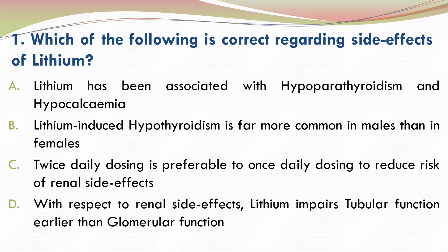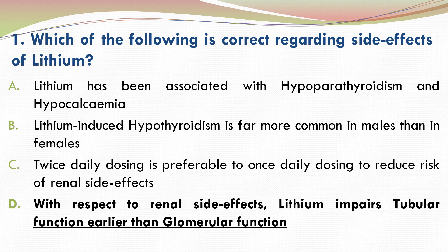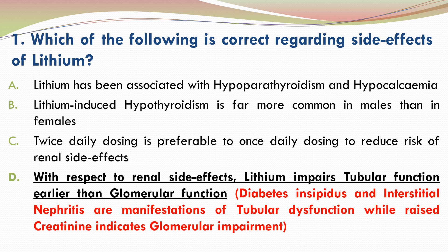The correct answer is B. With respect to renal side effects, lithium impairs tubular function earlier than glomerular function. Diabetes insipidus and interstitial nephritis are manifestations of tubular dysfunction and these occur earlier than raised creatinine, which indicates glomerular impairment. The other 3 options are incorrect.